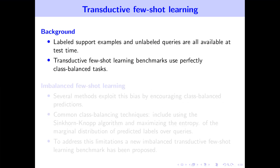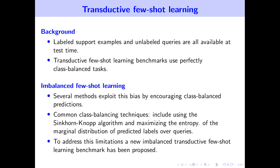In our work, we investigate the transductive few-shot learning setting, where labeled support examples and unlabeled queries are all available at test time. Transductive few-shot learning benchmarks use perfectly class-balanced tasks. However, it has been identified that several methods exploit this bias by encouraging class-balance predictions. Common class-balancing techniques include using the Sinkhorn algorithm and maximizing the entropy of the marginal distribution of the predicted labels over queries. To address this limitation, a new imbalanced transductive few-shot learning benchmark has been proposed.